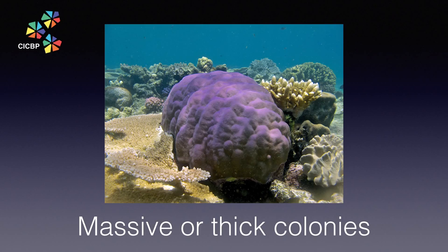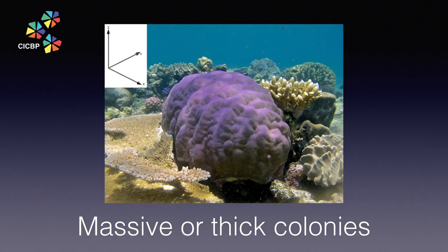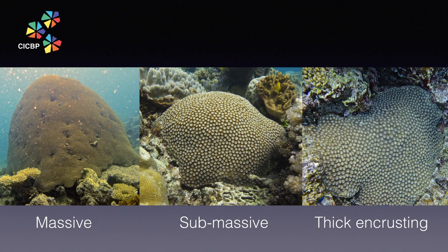Back to the massive and thick colony key group. Let's start by defining just what we mean by a massive coral. You may be surprised to learn that the term massive coral colony does not refer to the coral's size, but rather its form. A massive coral colony is a mound or dome with roughly similar dimensions in any direction — length, width, height. If the coral grows flat in one dimension, then we might refer to the coral colony as sub-massive, which still keeps us in the massive key group.